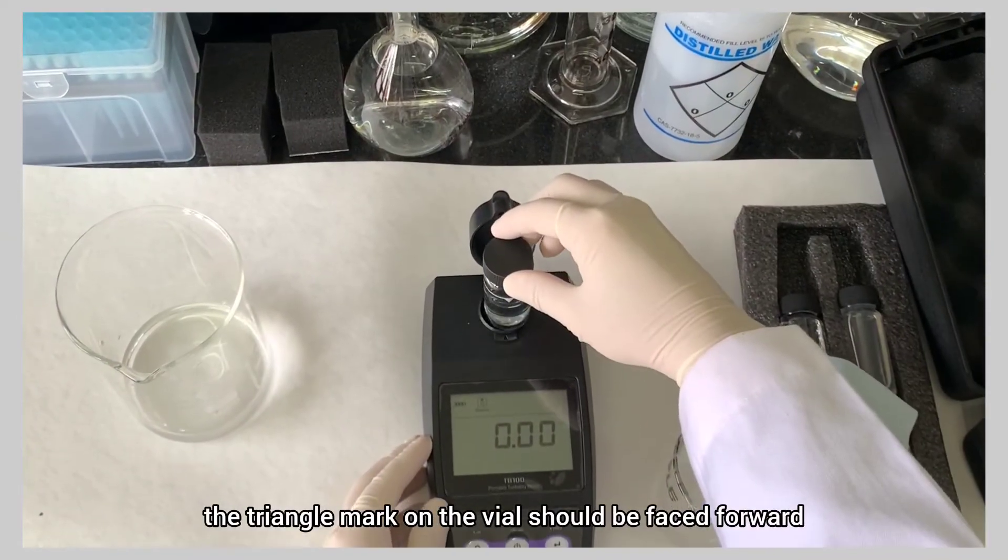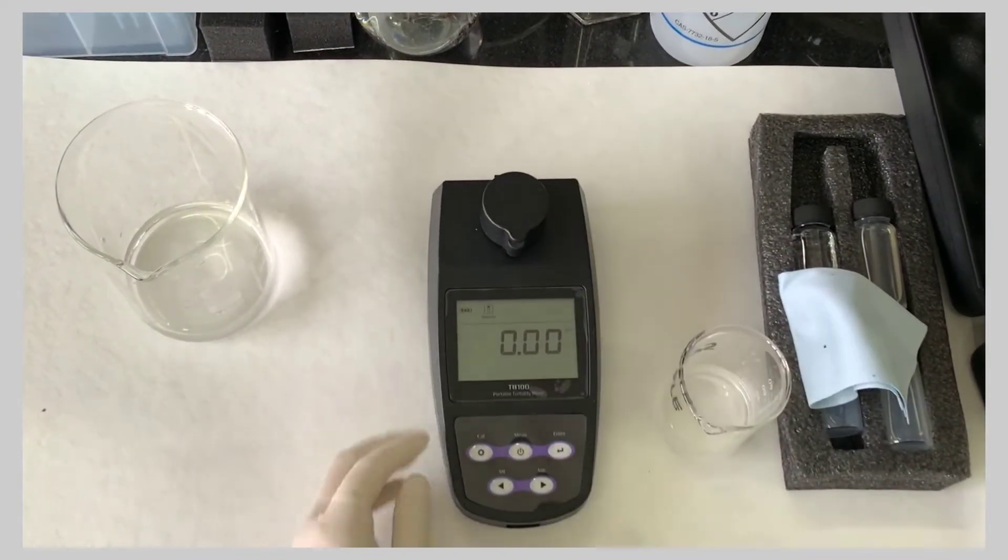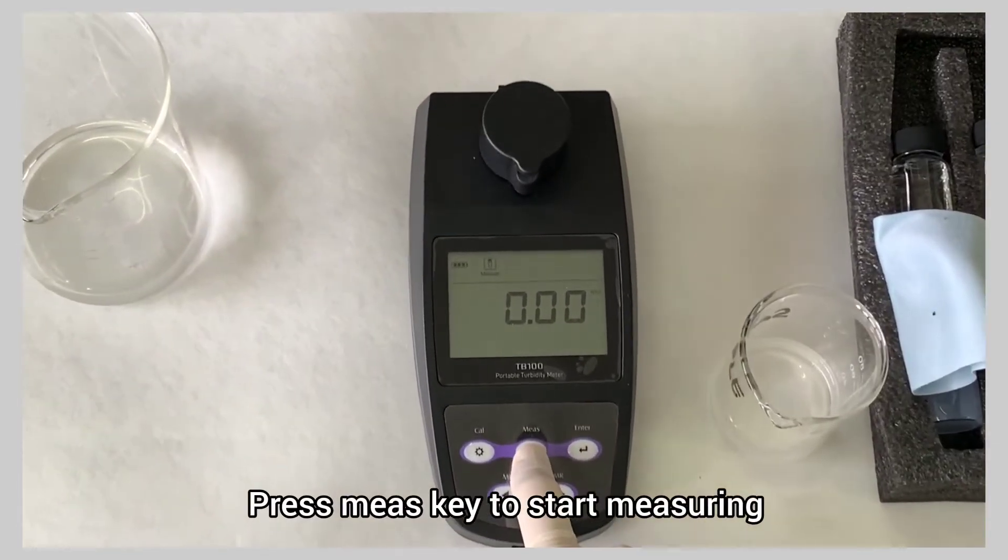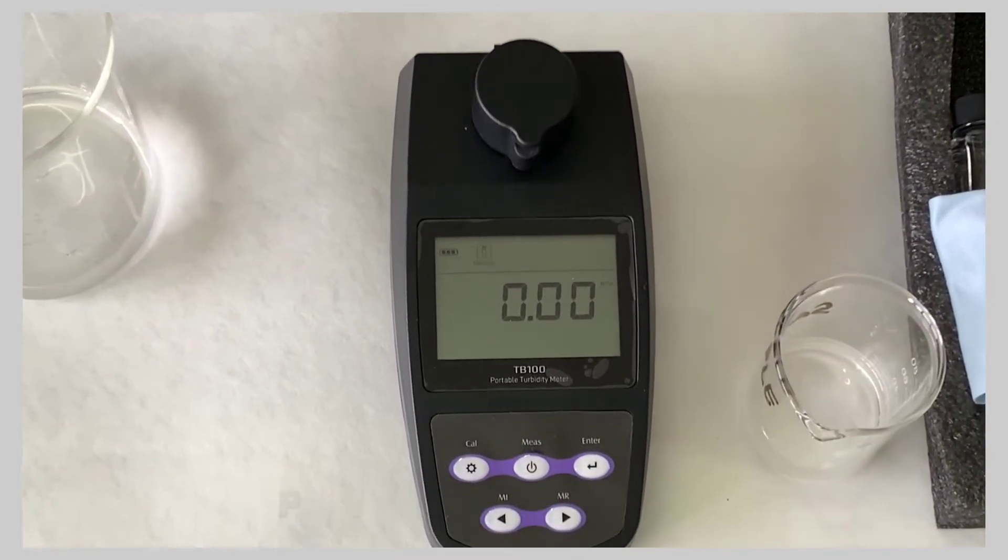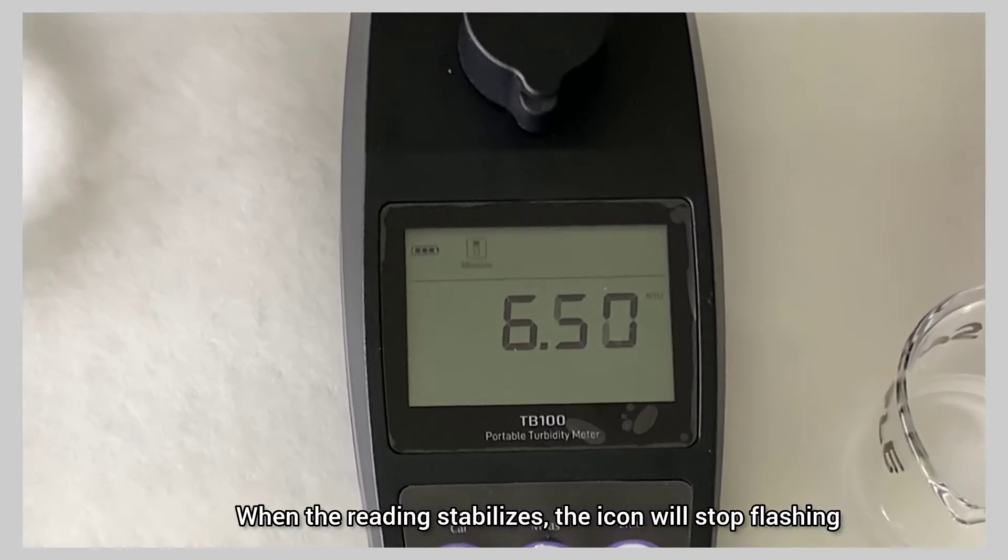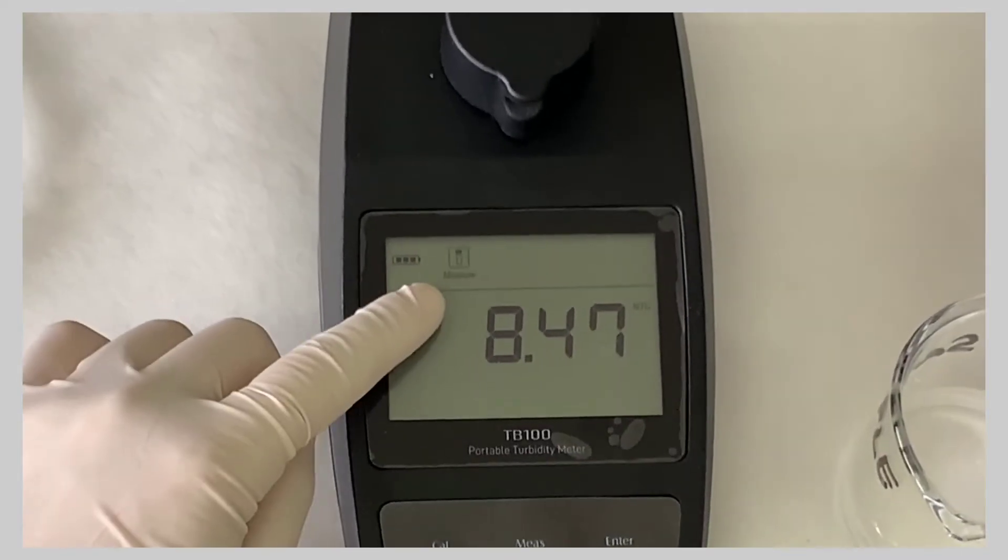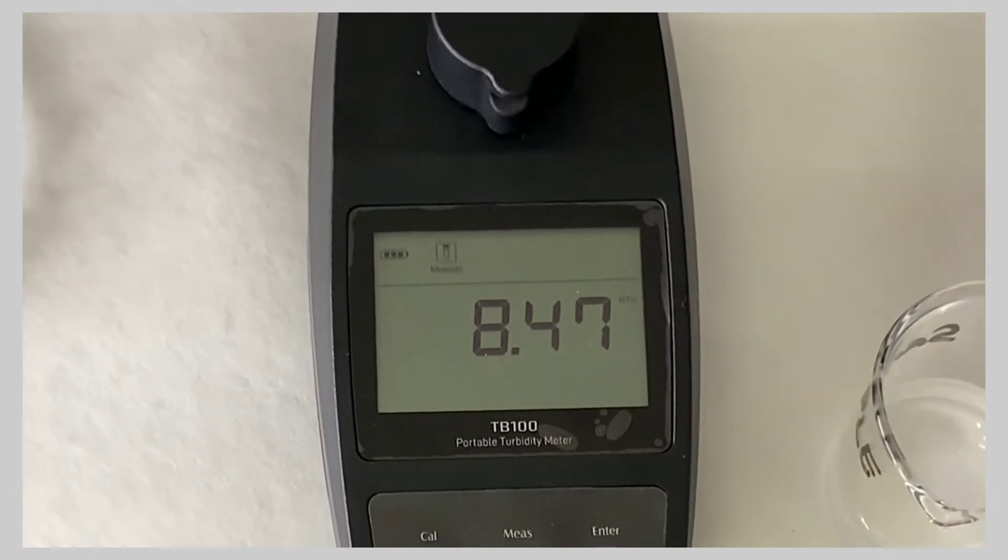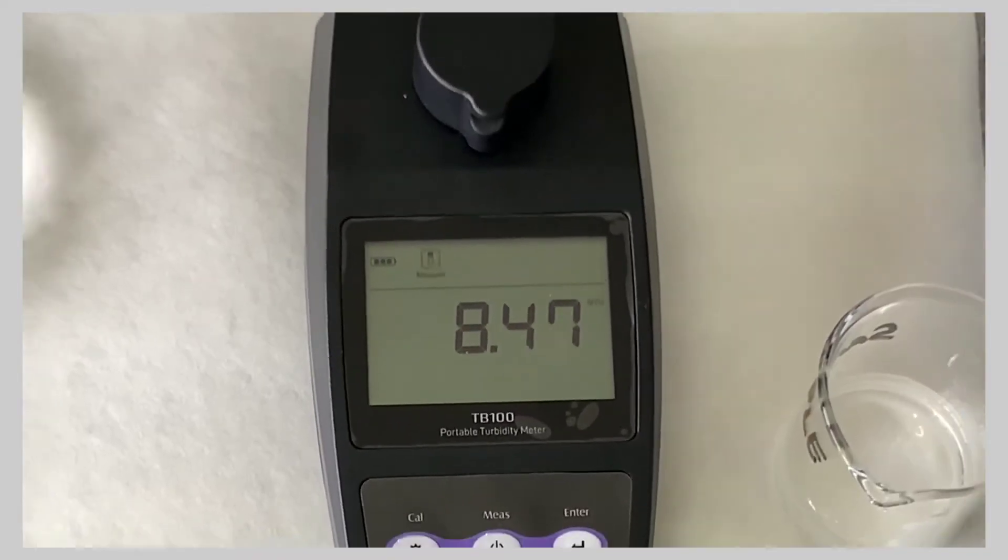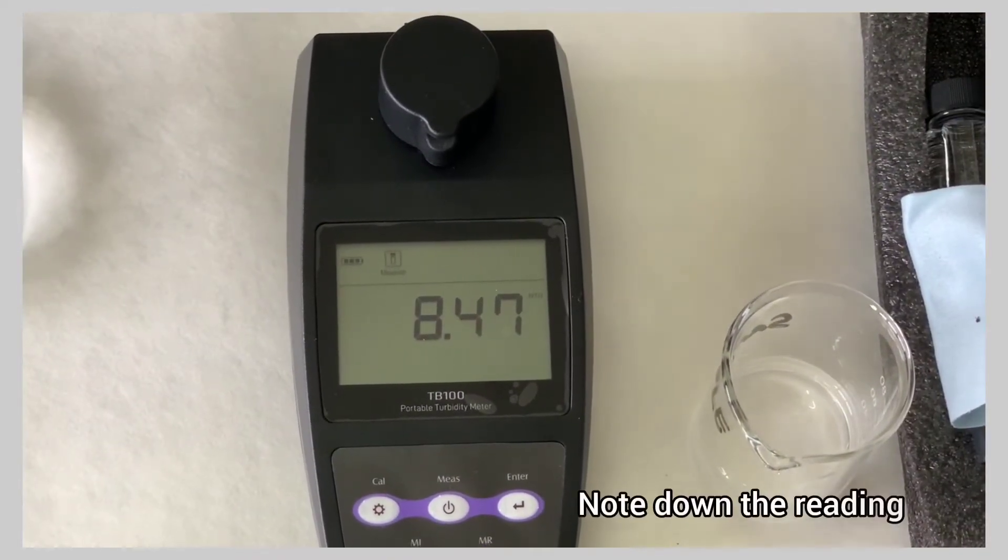The triangle mark on the vial should be faced forward. Press MES key to start measuring. When the reading stabilizes, the icon will stop flashing. Note down the reading.